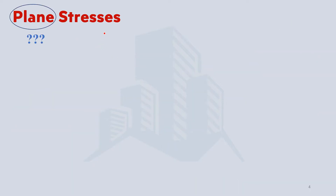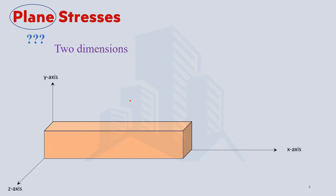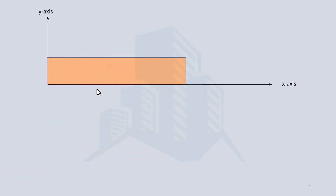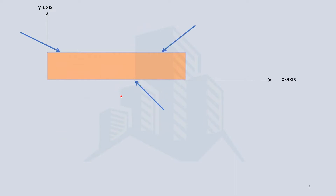When we talk about plane stresses, a plane is two-dimensional, not three-dimensional. To simplify the complexity in engineering practice, the stresses on one axis are considered negligible. We neglect the stresses in the z direction, leaving us with an object in the x-y direction only. The same forces act on it, but we now only consider the x-y plane.